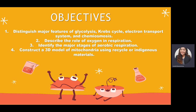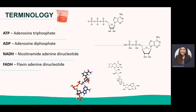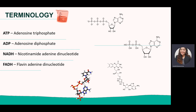Here are the objectives for today's discussion, which can be read in our module. The key terminologies to be familiar with first: ATP, the energy currency of all cells, is the main focus of this topic. ATP means adenosine triphosphate. ADP is adenosine diphosphate, while NADH is nicotinamide adenine dinucleotide.